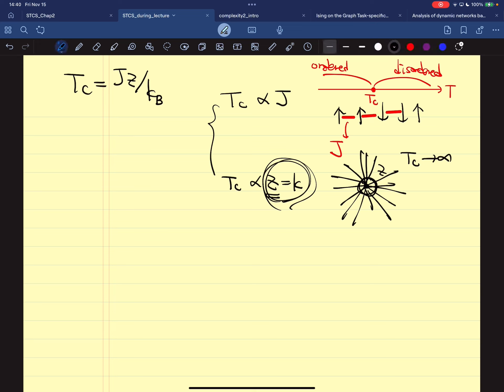Please note that TC is zero in one dimension. So for the diverging TC case, it means it is always an ordered phase, regardless of the temperature.